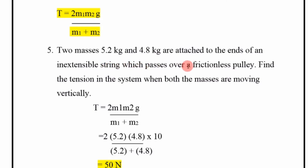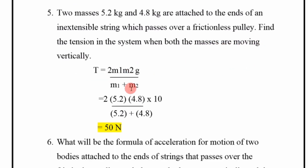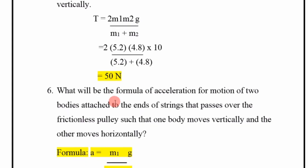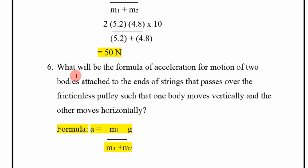Numerical: Two masses 5.2 kg and 4.8 kg are attached to the end of an inextensible string which passes over a frictionless pulley. Find the tension in the system when both masses are moving vertically. Using T = 2m1m2/(m1 + m2) × g, we put the values and get T = 50 Newton.